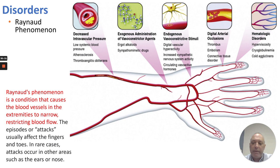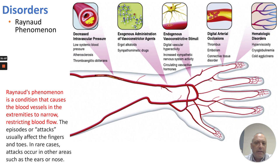Raynaud's phenomenon is a condition that causes blood vessels in the extremities to narrow, sometimes turning the fingers purple. Episodes or attacks affect the fingers and toes, sometimes the ears and nose. There is a decrease in intravascular pressure — low blood pressure — a little bit of atherosclerosis, endogenous vasoconstriction leading to decreased blood flow, and possible arterial occlusions from thrombus or embolism. The end result is decreased circulation to the fingers, which turn blue. It is a blood disorder.